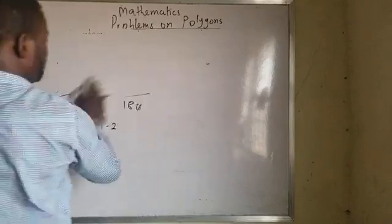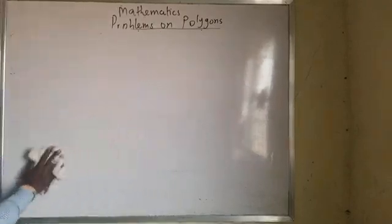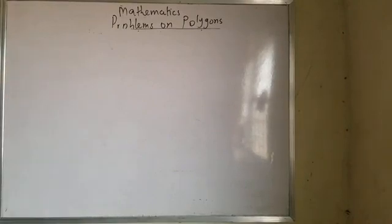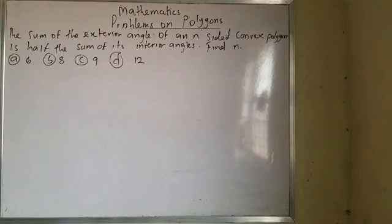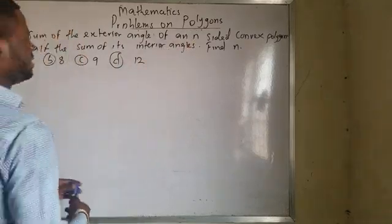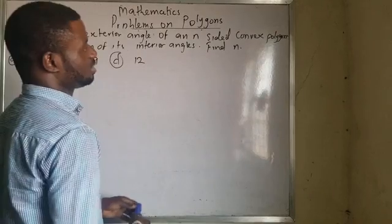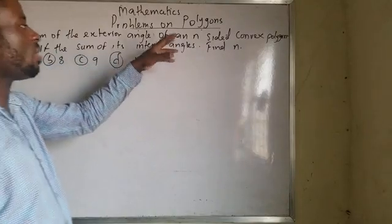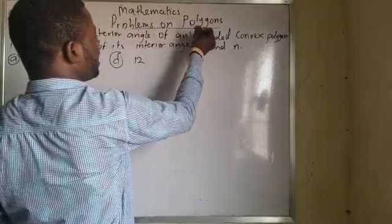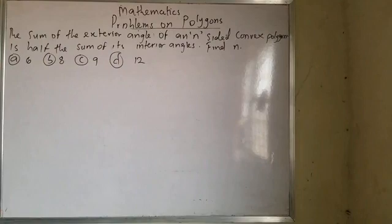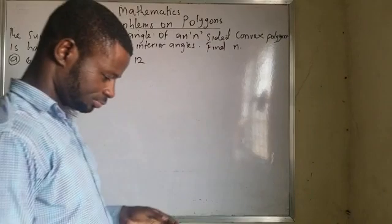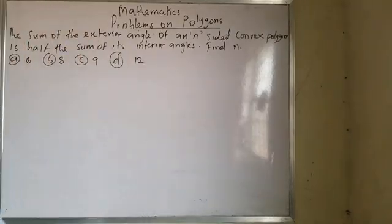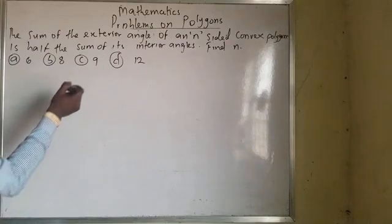Now look at this problem. The sum of the exterior angles of an n-sided convex polygon is half the sum of its interior angles. Find n. Now when we talk about a polygon, there are different types, but a polygon itself refers to a multilateral shape.